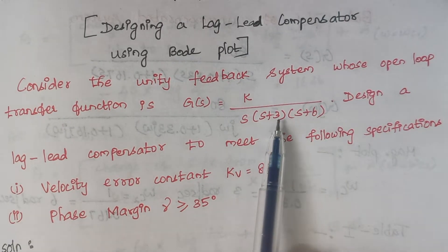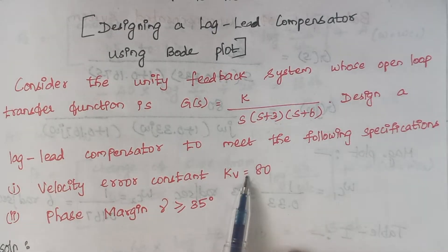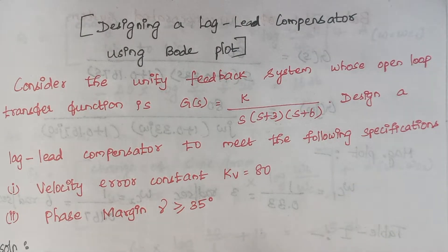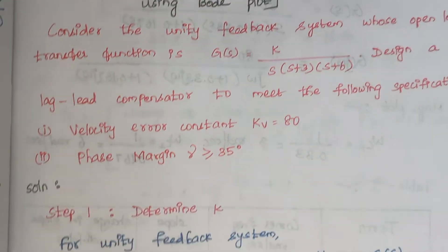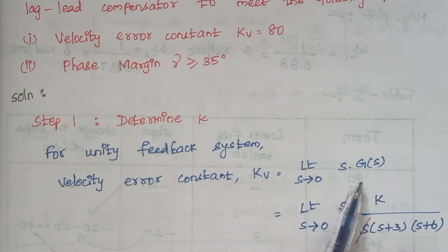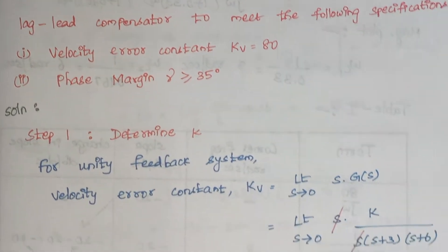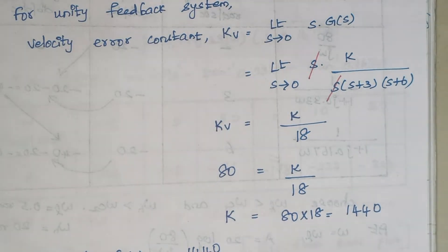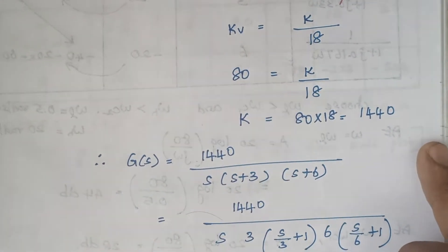The open loop transfer function is given and the type of feedback is unity feedback. The velocity error constant is given — with the help of this we have to find the value of k, and next we have to design a lag-lead compensator to make the phase margin greater than or equal to 35 degrees. Step one is to find k. For the unity feedback system, the velocity error constant is given by the formula: limit s tends to 0, s into G(s). When you substitute the value of s equal to 0, finally we get the value of k as 1440.